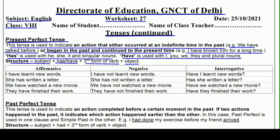सबसे पहले है affirmative sentence। Affirmative यानि simple sentences। जैसे: I have learnt new words — मैंने नए शब्द सीख लिए हैं। Negative में: I have not learnt new words — मैं नए words नहीं सीख चुका हूँ। Interrogative में: Have I learnt new words? — क्या मैं नए words सीख चुका हूँ?